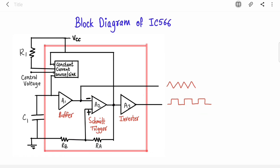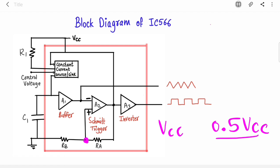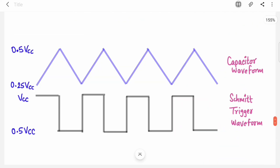The Schmitt trigger has positive feedback so it operates in saturation, switching only between two levels. With a Vcc supply it operates between Vcc and 0.5 Vcc. Ra and Rb are equal resistors, so the reference voltage at the non-inverting input is Rb/(Ra+Rb) × Vcc = 0.5 Vcc. The Schmitt trigger compares the capacitor voltage with this reference. When the capacitor charges up to 0.5 Vcc, the output flips — the Schmitt trigger output switches from Vcc to 0.5 Vcc.